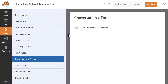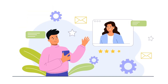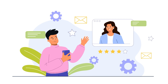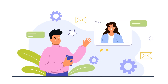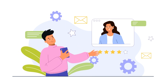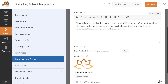Once inside the Form Builder, you can easily convert a new or existing form into a conversational one with just a click. You can customize a title, include a message or directions that will appear at the top of the form, and create a custom permalink URL, and even upload a header image or logo to help with branding.